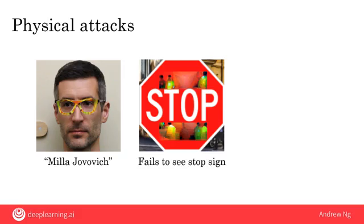A different group of researchers from UC Berkeley, University of Michigan, and other universities showed that if you affix stickers onto a stop sign, you can fool an AI system into not seeing the stop sign at all — it thinks there's something else there. The stop sign just looks like it has graffiti on it, and most humans would still see it as a stop sign. But it would be really unfortunate if a computer vision system in a self-driving car doesn't see the stop sign because of these stickers.